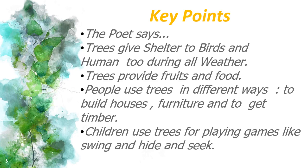The key points of the poem were: the poet says trees give shelter to birds and humans too during all weather. Trees provide fruits and food. People use trees in different ways — to build houses, furniture, and to get timber. Children use trees for playing games like swing and hide and seek.